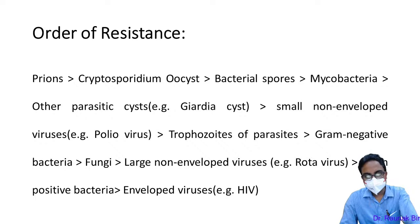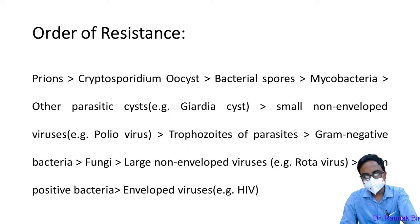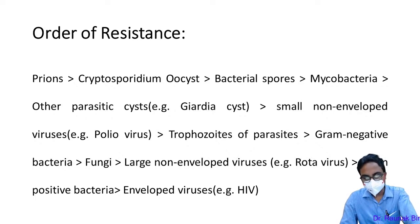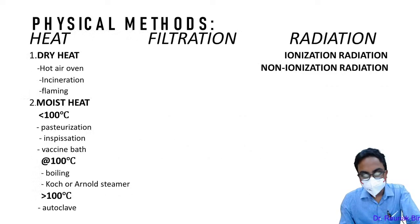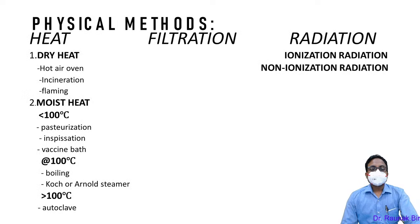This is followed by trophozoites of parasites like Giardia and Entamoeba trophozoites, then gram-negative bacteria, followed by fungi, then large non-enveloped viruses like rotavirus, then gram-positive bacteria, and lastly the weakest are enveloped viruses like HIV and coronavirus.